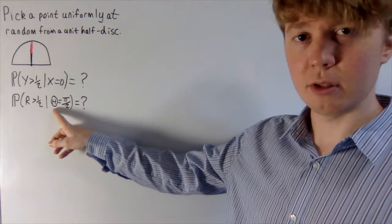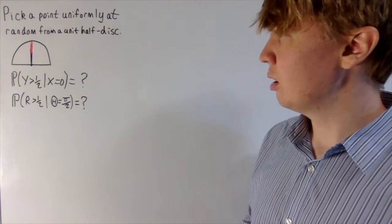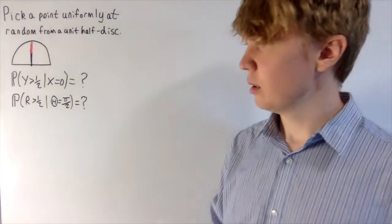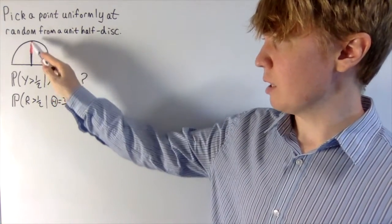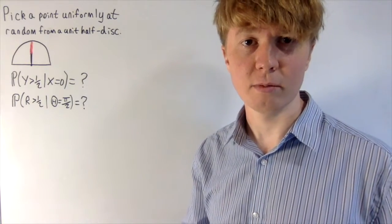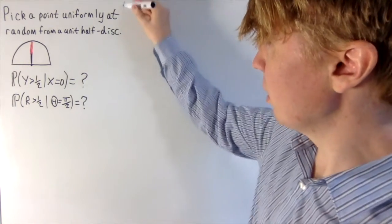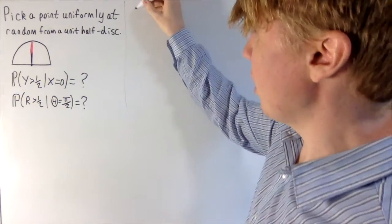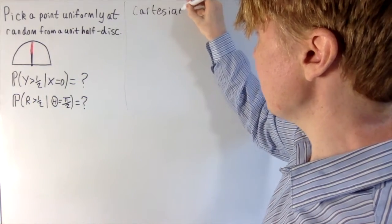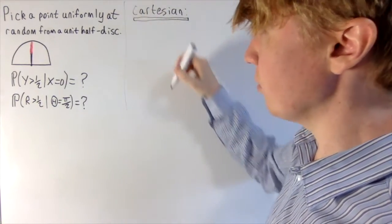Here I've got capital theta for the random variable representing the angle that your point makes with the positive x-axis. So given that we lie on this line, what is the probability that we lie in the top half of this line segment? Let's go straight into calculating this for the Cartesian form. Because we're conditioning on a zero probability event, we've got to be really careful here.